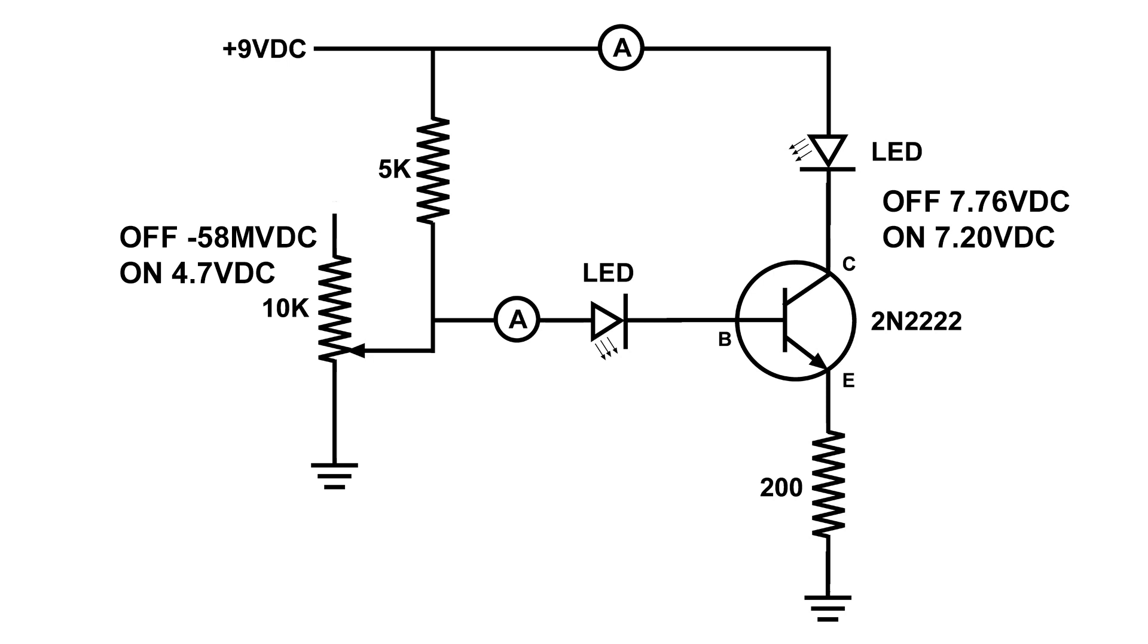Now, when I turned up the resistor all the way, we had on the base circuit 4.7 volts DC. But look what happened in the collector circuit—it went down a little bit, not much.